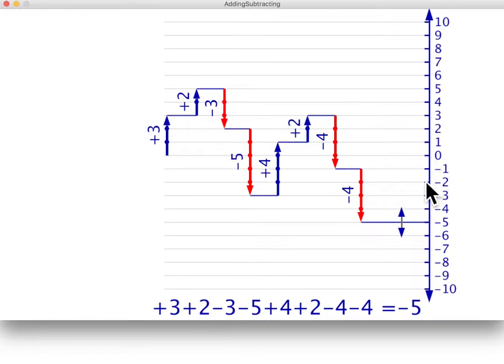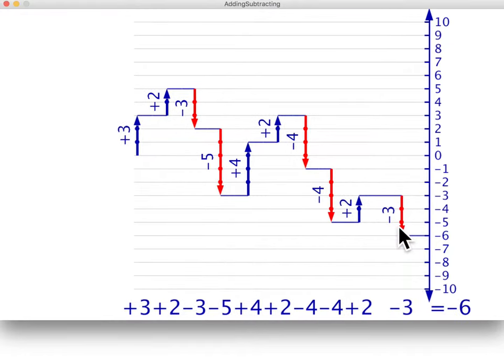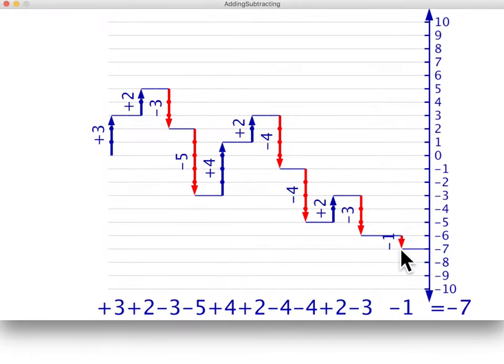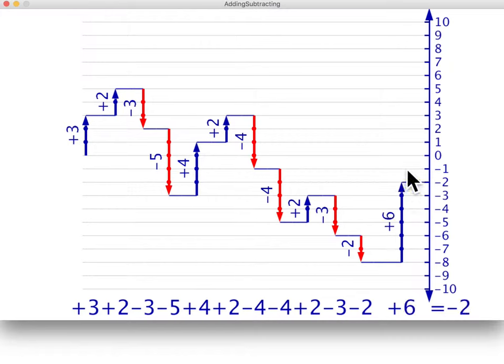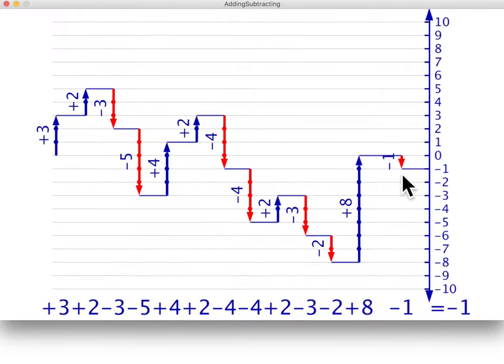We can also use negative to refer to the direction of the step. Positive steps go up and negative steps go down. Minus two is the same size and direction whether it refers to where we are, called the value, or what we're doing, called the operation.